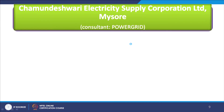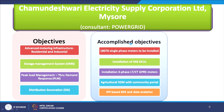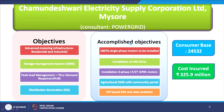Chamundeshwari Electric Supply Corporation, Mysore, also achieved a good initiative in the field of smart grid. The accomplished objectives were installation of 18,076 single-phase meters, installation of 446 DCUs, installation of three-phase LTCT GPRS meters, agricultural DSM with community portal, and KPI-based MIS and data analytics. This is also a quite successful project — the Chamundeshwari project.